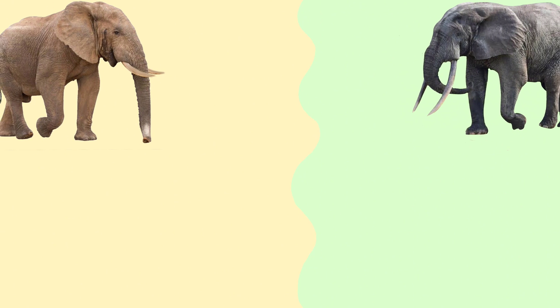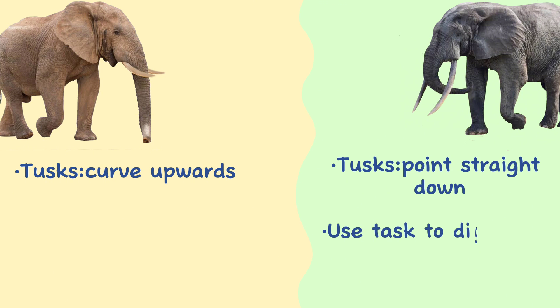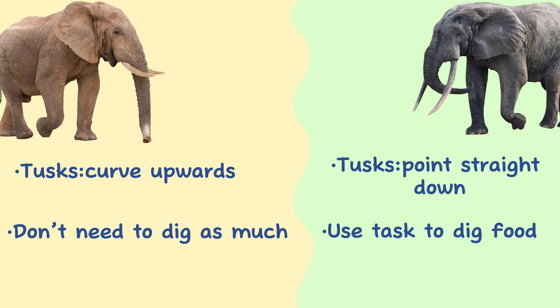Tusk. The tusks of a forest elephant point straight down, whereas a savannah elephant's tusks curve upwards. This is because forest elephants live in a more lush environment and spend a lot of time digging with their tusks, whereas savannah elephants don't need to dig as much because they reside in more arid regions.